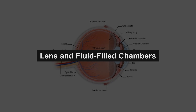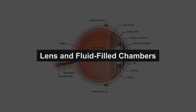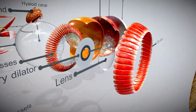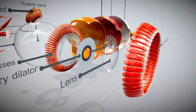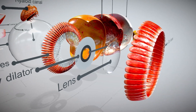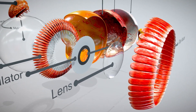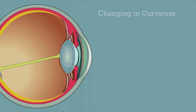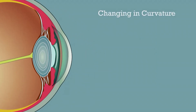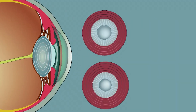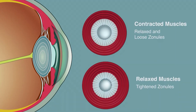Behind the iris and pupil lies the lens, a transparent, flexible structure that adjusts its shape to focus light precisely on the retina. The lens's ability to change curvature, known as accommodation, allows the eye to clearly view objects at various distances.